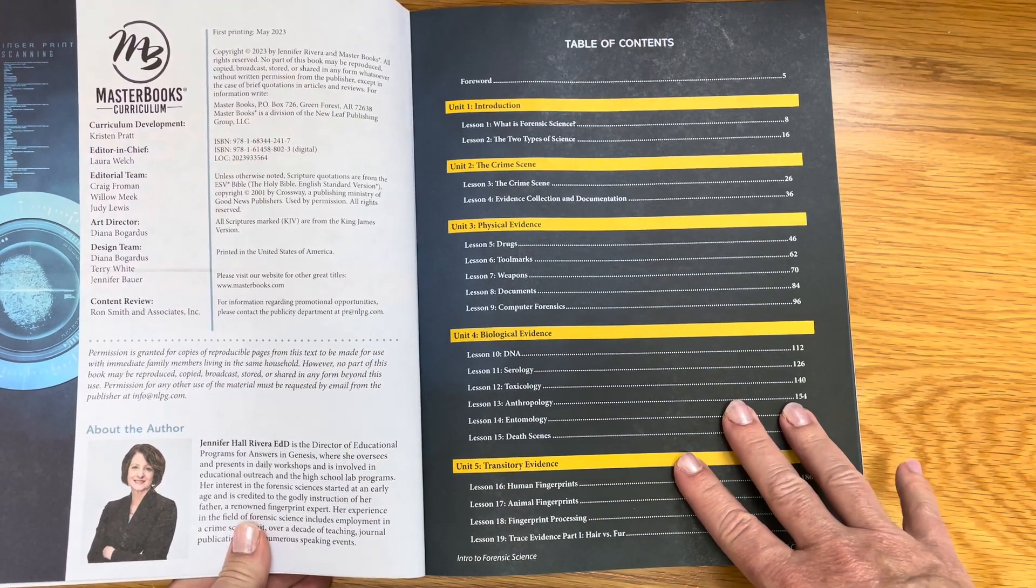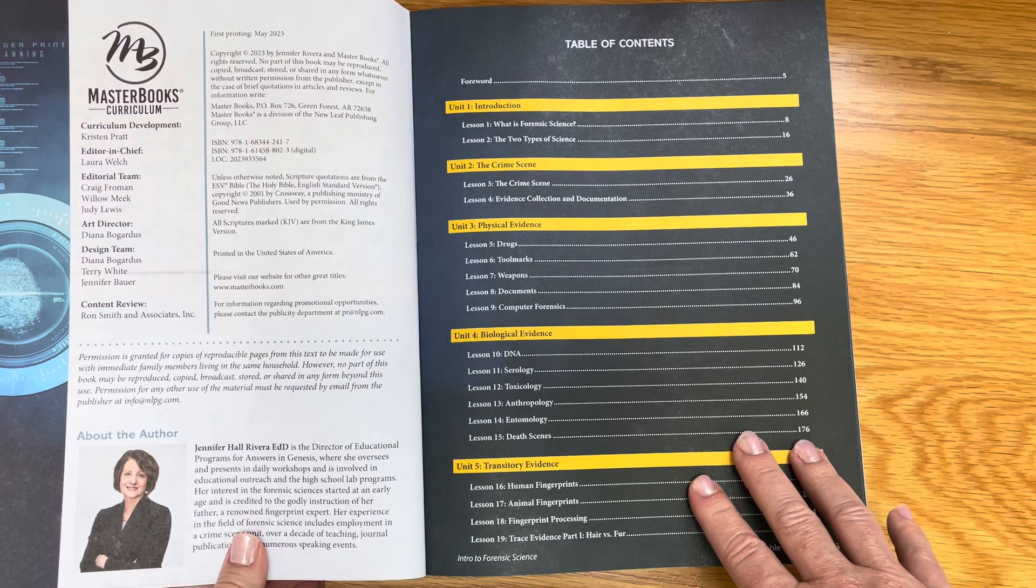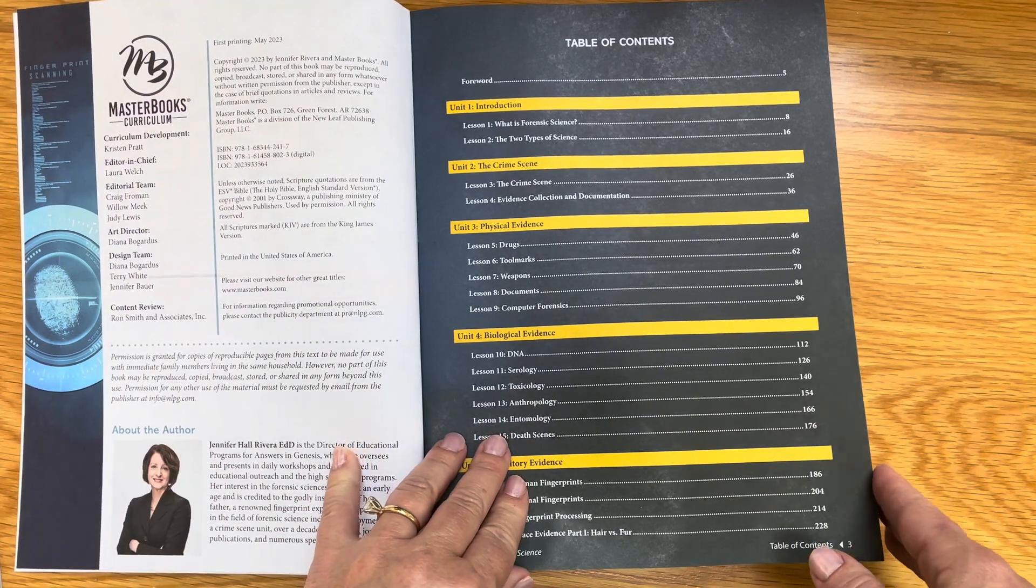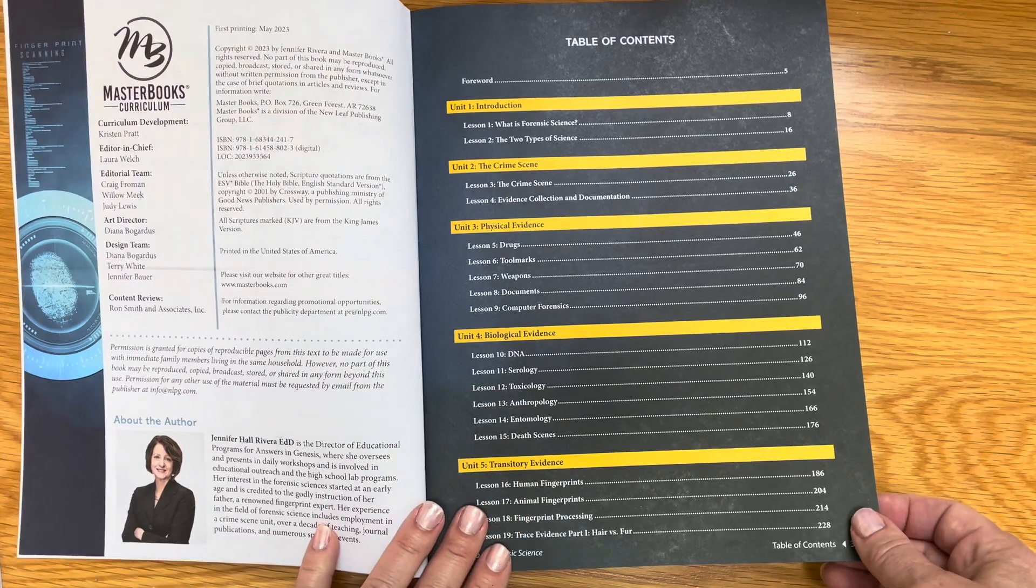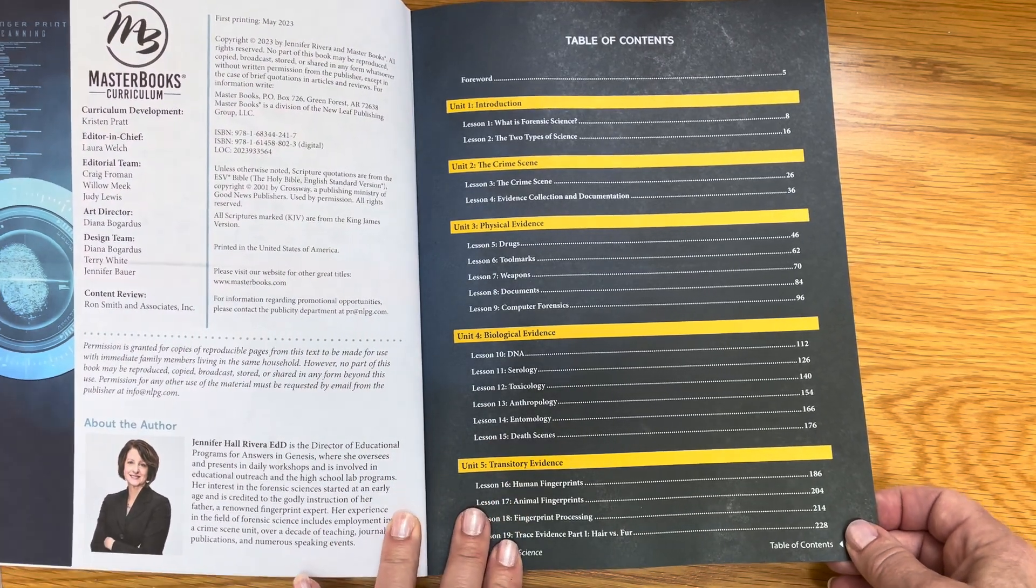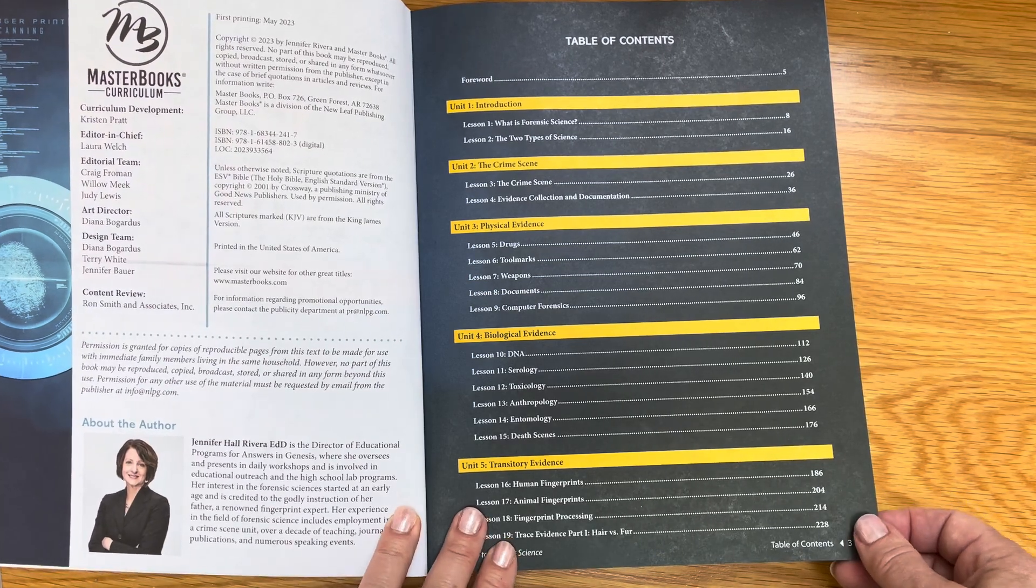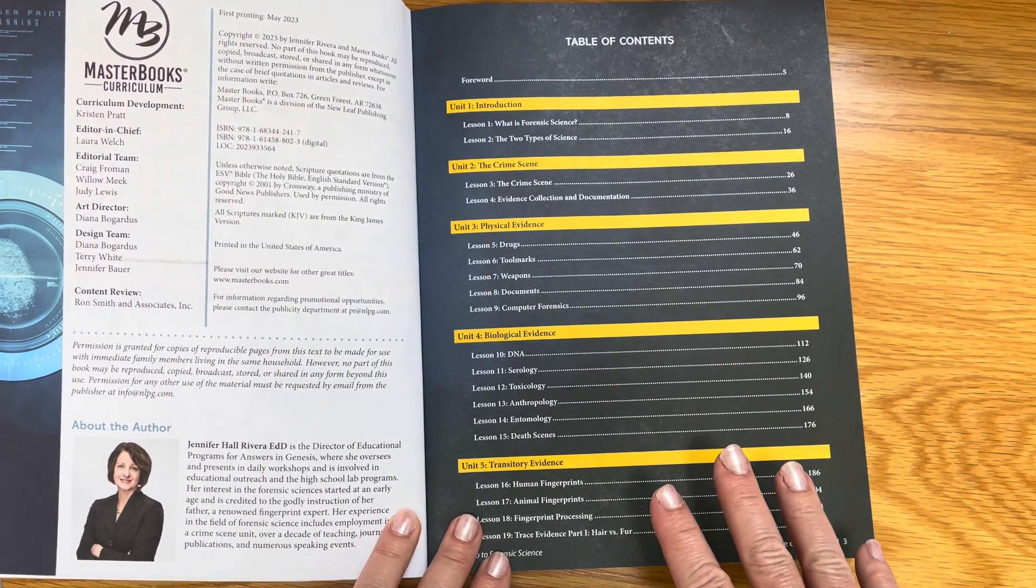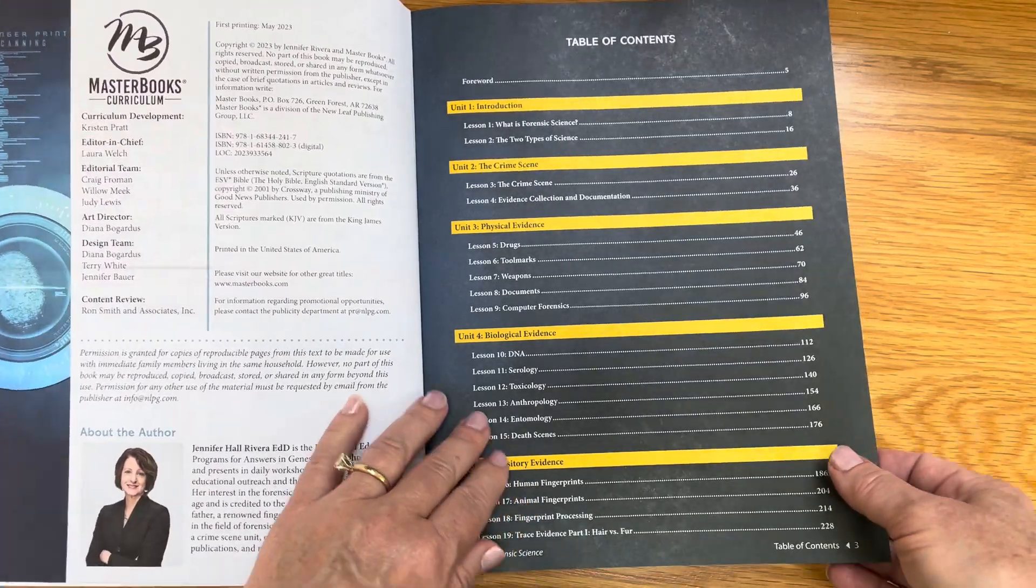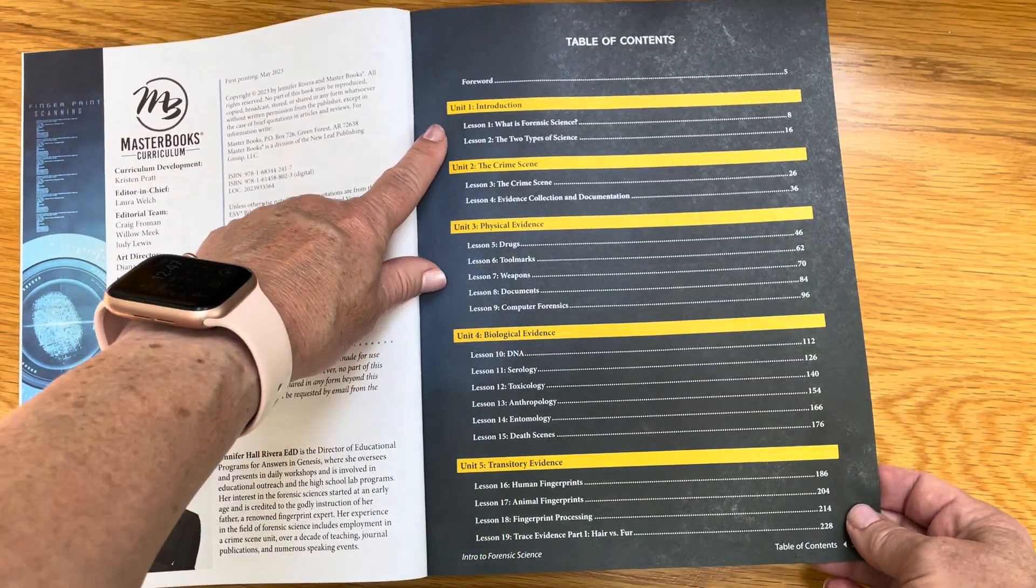This is a full year curriculum. It is one science credit with lab for high school. As I said before, it's expected to be for 11th and 12th grade, and one reason is because of the subject matter that will be involved in the curriculum. We'll talk more about that in a minute, but let's look through the table of contents.